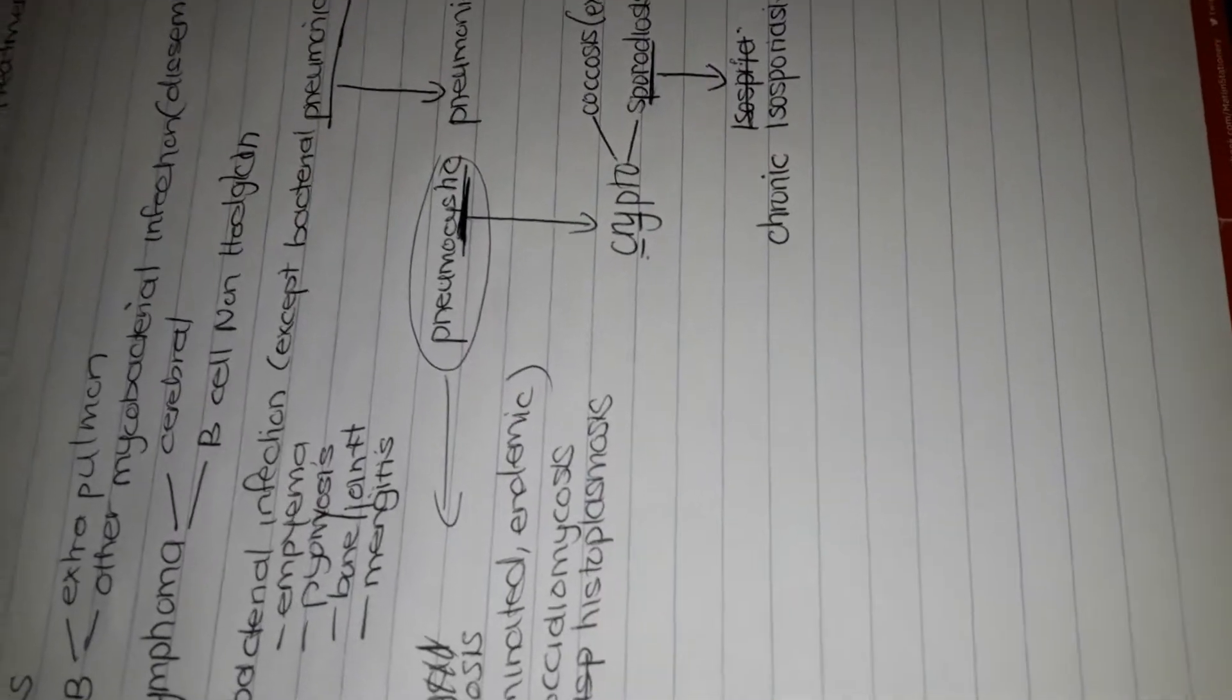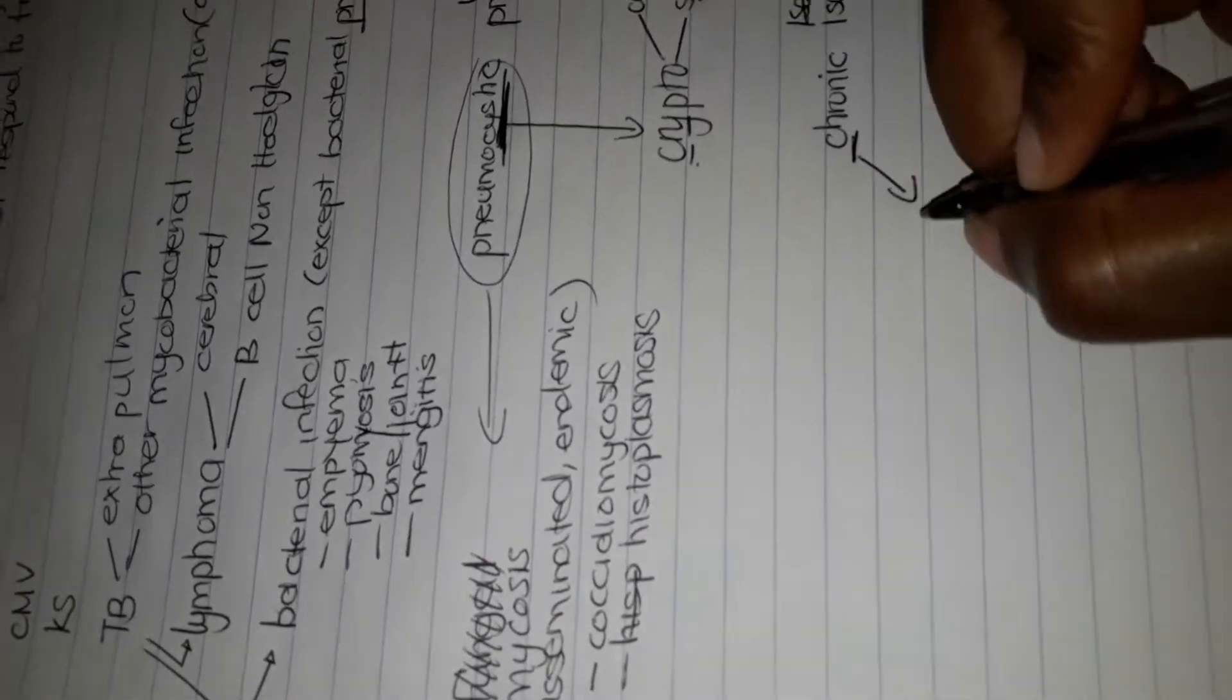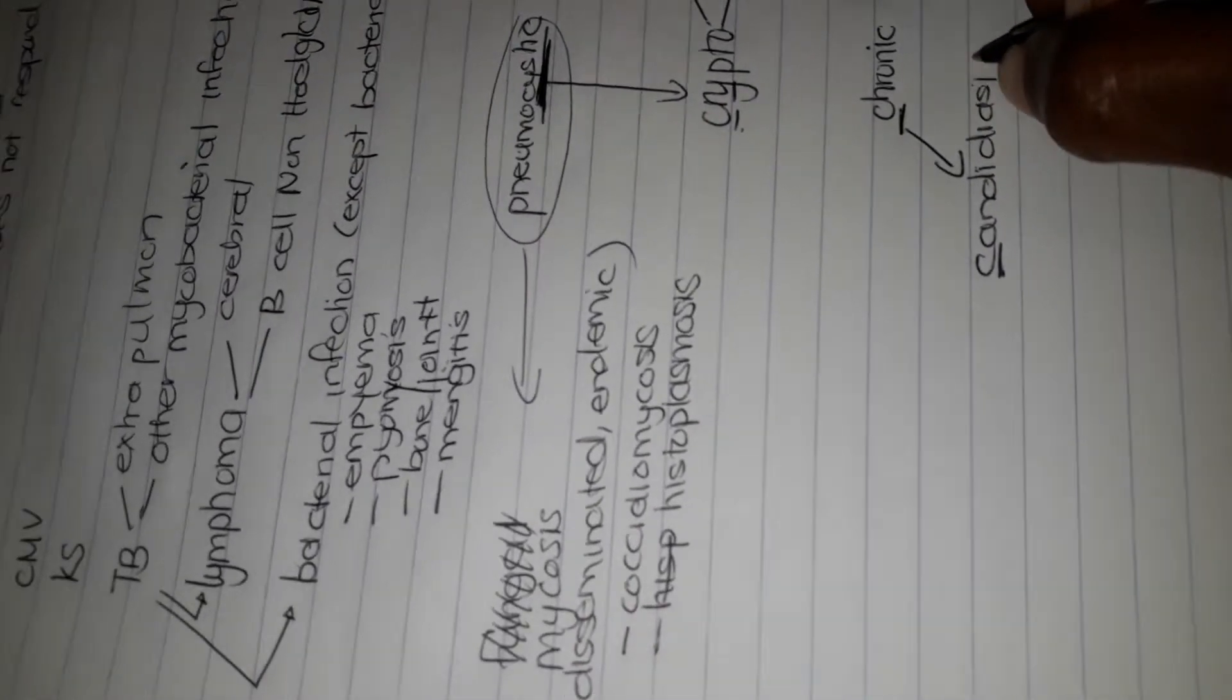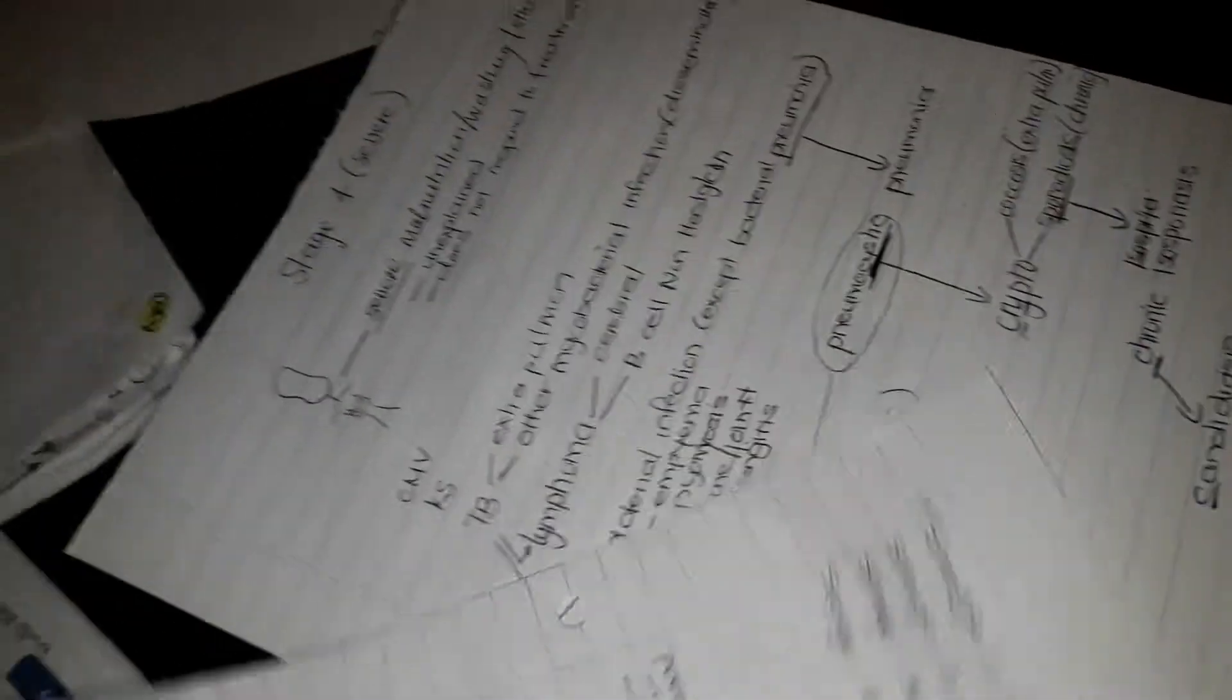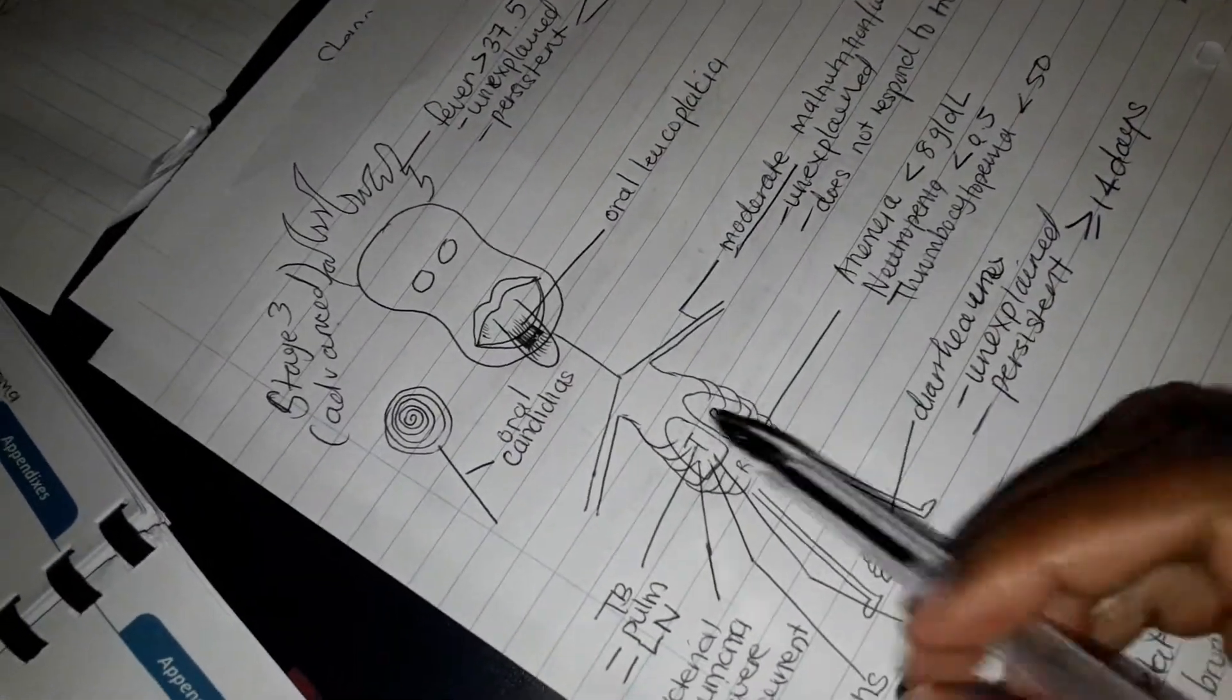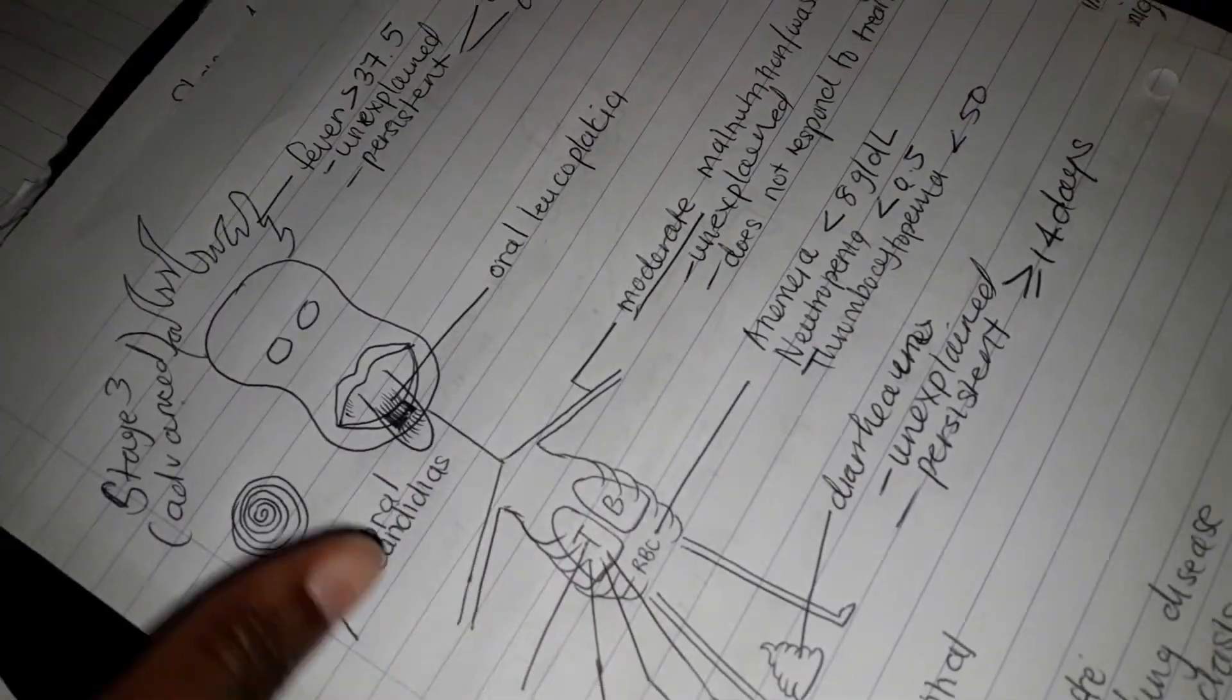After chronic cryptosporidiosis, I then take the C of chronic and I think of candidiasis because it starts with C. Remember before we had oral candidiasis. Here we are not speaking about oral candidiasis which we had in Stage 2. It is not oral candidiasis like it was in the previous stage.